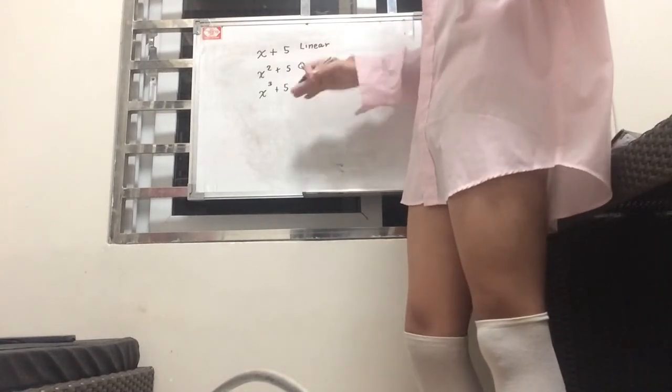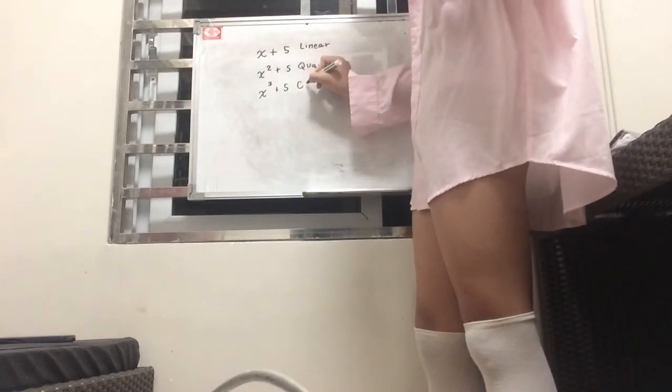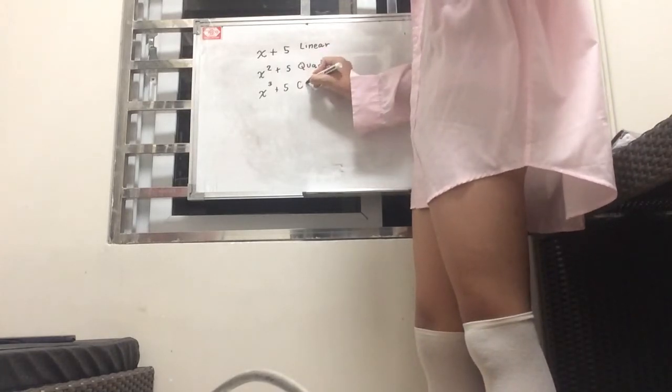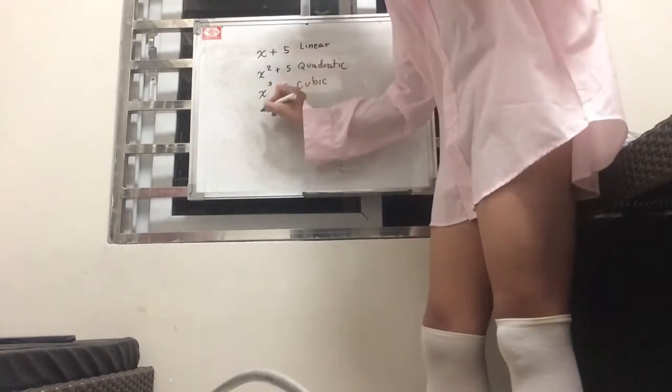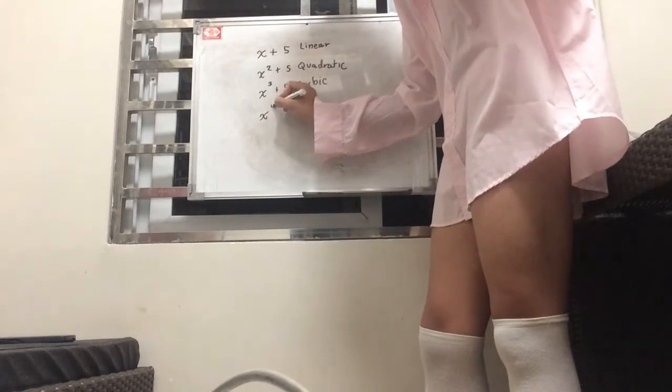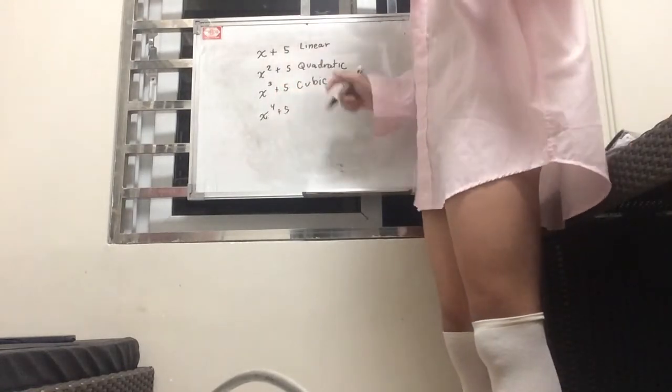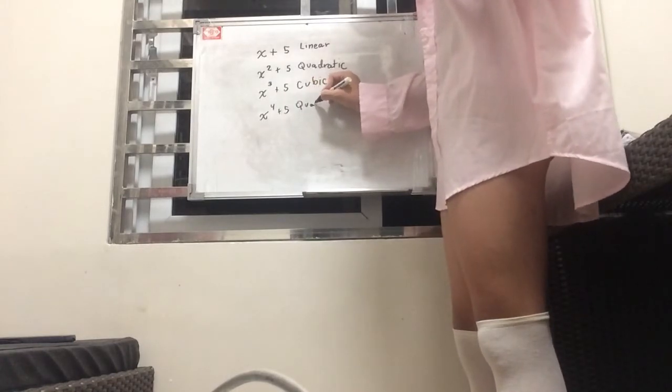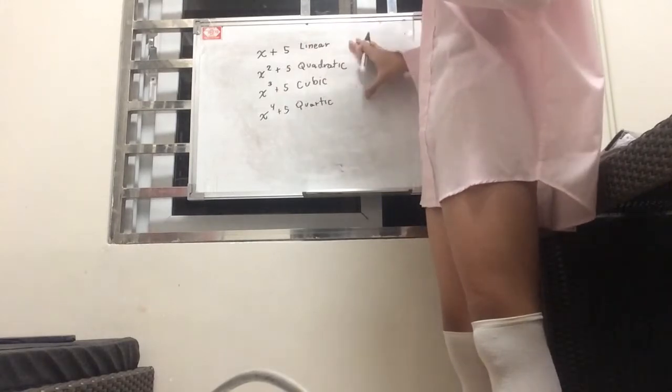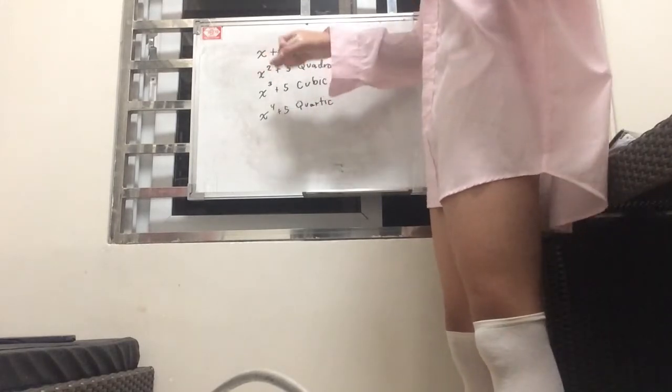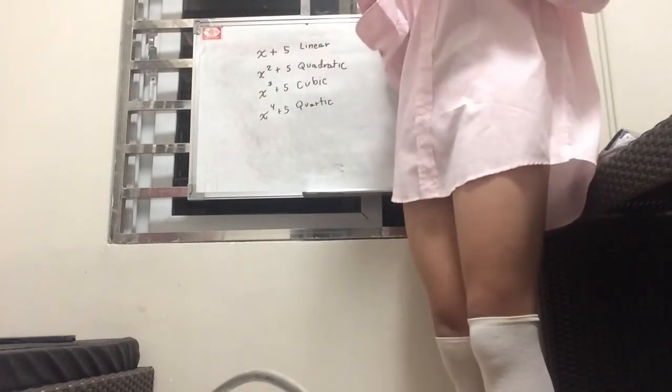And now, what if we're given something like x to the third plus five. Now, that is what we call a cubic equation, because x is being cubed, much like the quadratic equation, but yeah, except with a three. And this is a cubic. And now, if it's a four, x to the fourth plus five, this is going to be a quartic equation.